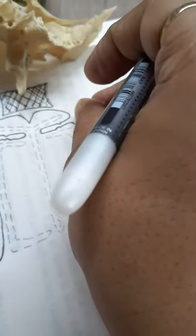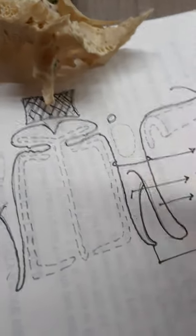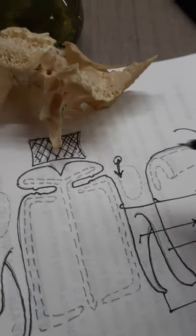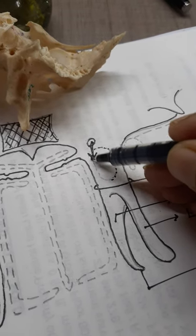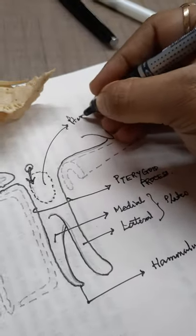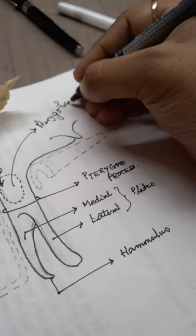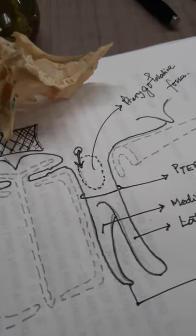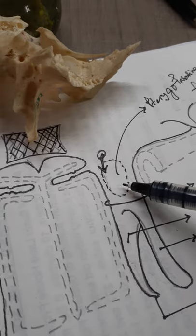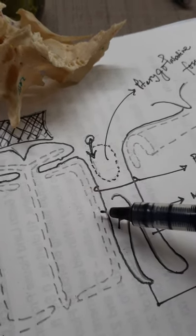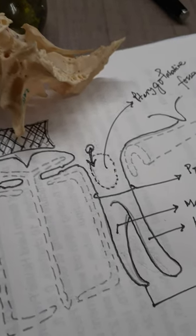If we trace the two plates above, we can see the opening of the foramen rotundum through which the maxillary nerve is supposed to appear. The maxillary nerve appears in a space known as the pterygopalatine fossa. This space is formed by the enclosure of the pterygoid process as well as the palatine bone.